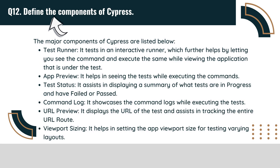Define the components of Cypress. The major components of Cypress are: TestRunner, which tests in an interactive runner that lets you see and execute commands while viewing the application under test. App Preview, which helps in seeing the tests while executing the commands. Test Status, which displays a summary of tests in progress, failed, or passed. Command Log, which showcases command logs while executing tests and displays the URL of the test to track the entire URL route. Viewport Sizing, which helps in setting the app viewport size for testing varying layouts.